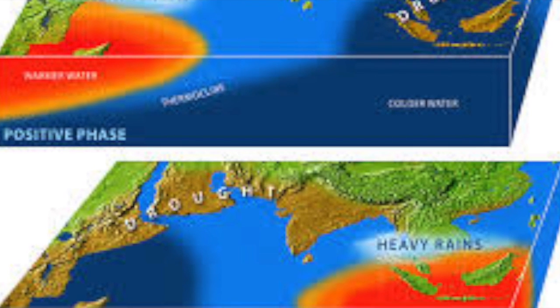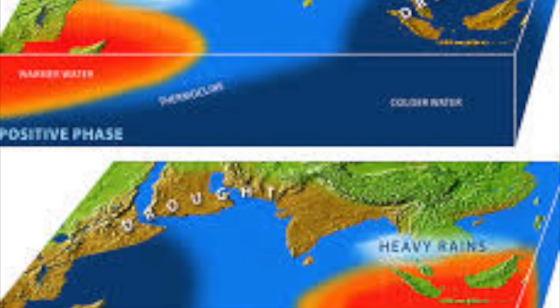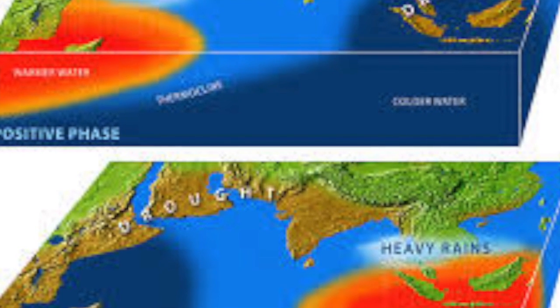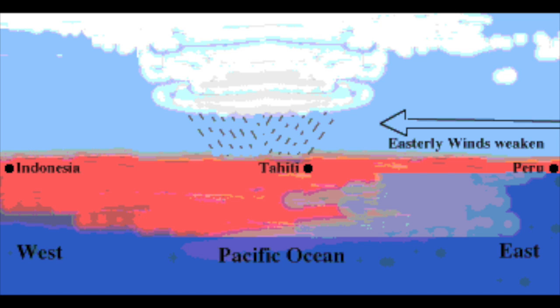El Niño creates massive rainfall in Ecuador and drought in Indonesia, pretty much making everything backwards in the Southern Hemisphere. The main cause of El Niño is the weakening of the trade winds, which causes pressures and climate to act abnormally, making life in South America backwards.